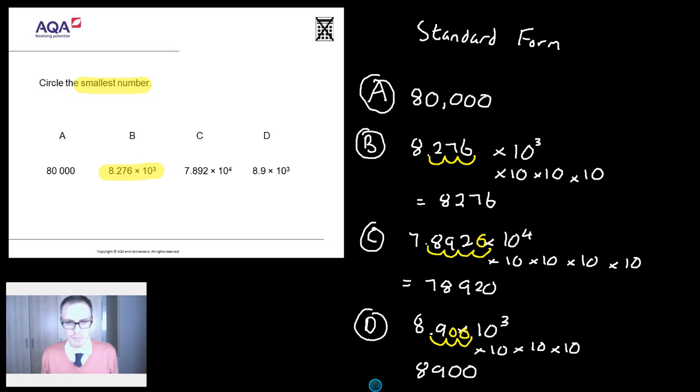So the question on everybody's lips is, what's the answer to the question? Circle the smallest number. We've got 80,000 there, 8,276. I think that's the smallest, isn't it? 8,276. I'm going to go for B. That's the smallest answer.